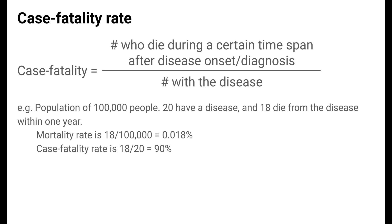However, the case fatality rate is much higher, at 18 out of 20, or 90%. So although this disease has a low mortality rate in the general population, those with the disease have a high chance of dying from it. Because of this differentiation, case fatality can be viewed as a measure of disease severity — it measures risk of death specifically among people who have the disease.